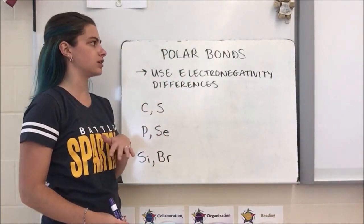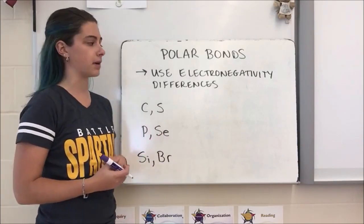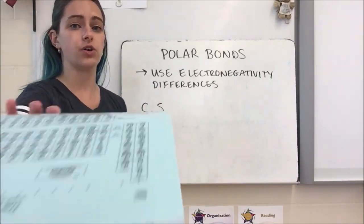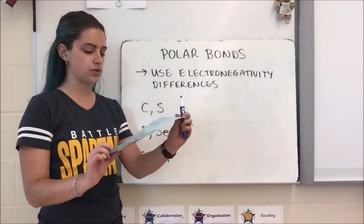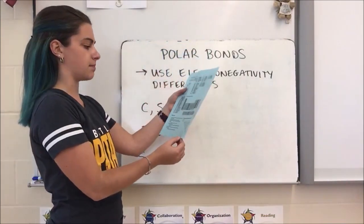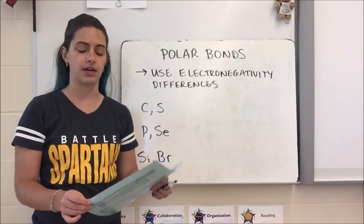When we want to determine whether or not something is a polar bond we have to use the electronegativity differences. Your table of electronegativity values can be found on the bottom of your periodic table in the bottom right hand corner, and we're only going to be looking at nonmetals for this.